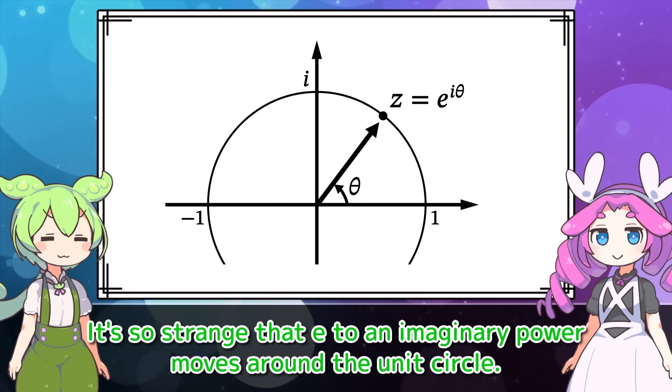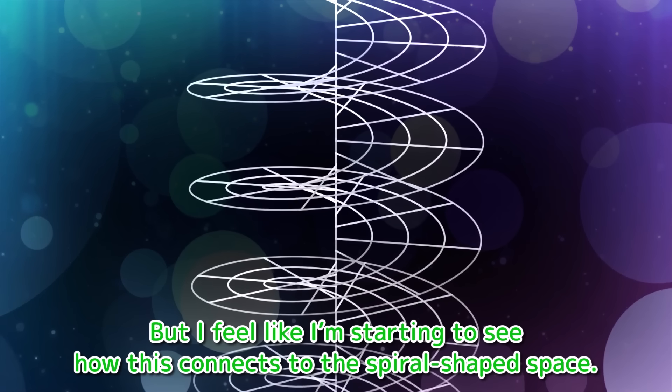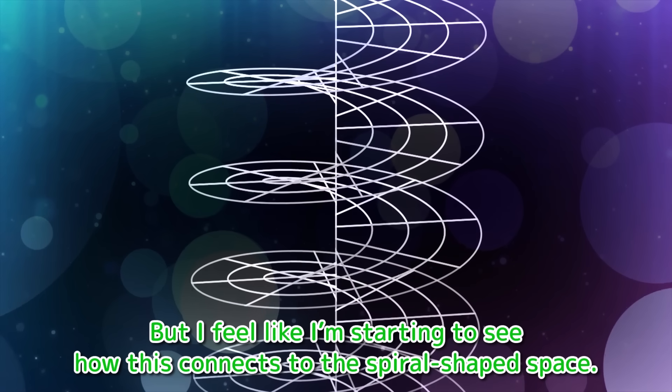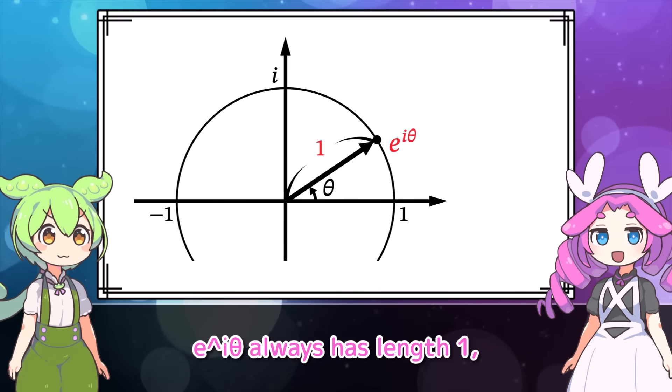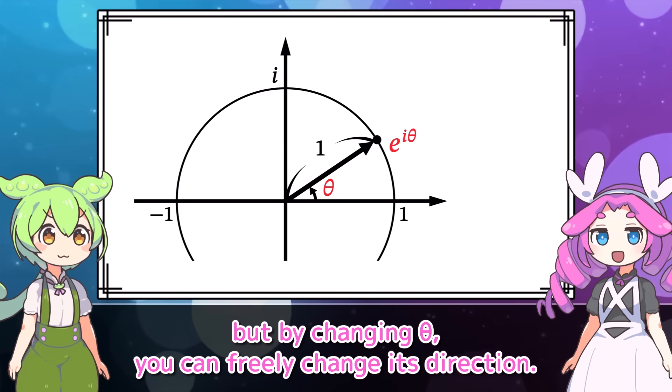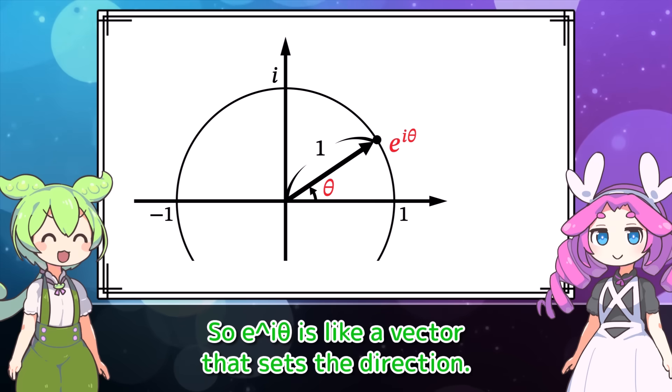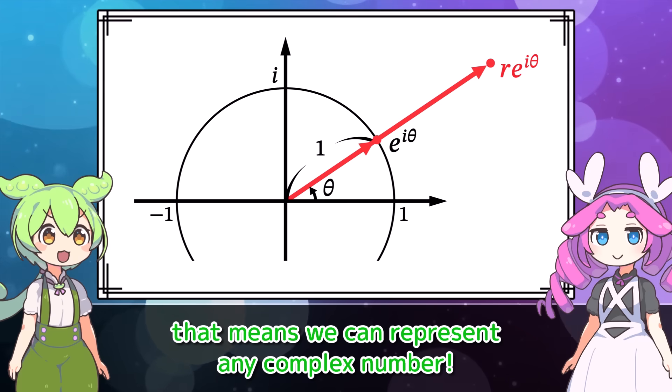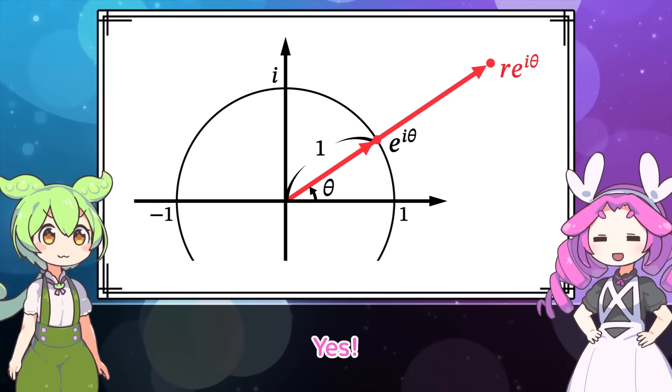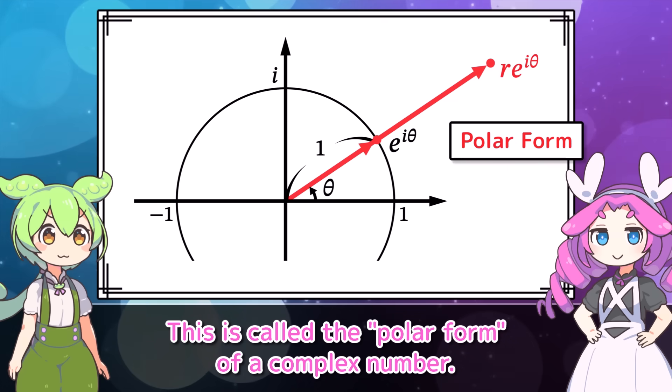Now, how can we express the real part x and imaginary part y using theta? Um, x is given by cosine of theta, and y is given by sine of theta. That sounds correct. So z = x + iy can be written as cos(θ) + i sin(θ). Now we will use Euler's formula. Euler's formula is a relationship in the world of complex numbers that links exponential and trigonometric functions.